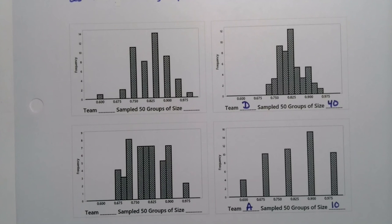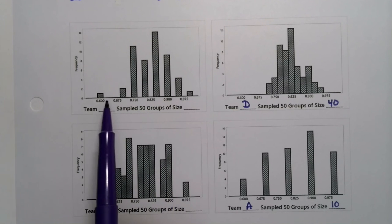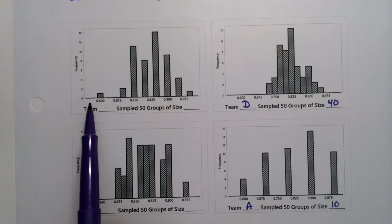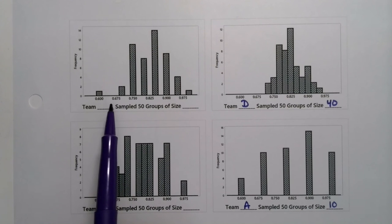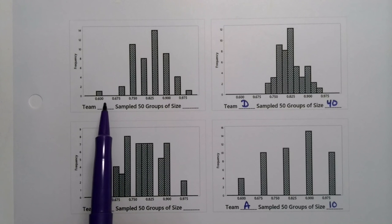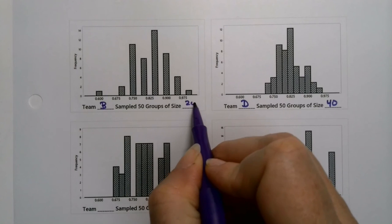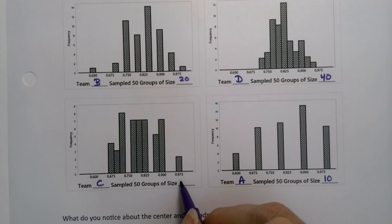And that's a little bit of a tricky call until you notice the spread. See how this one is more spread out. We've got a value over here past .975. We also have values back here at .60. This one has more spread than this one. So that means this one has to be smaller in sample size. So this has to be team B with sample size 20. And this has to be team C with sample size 30.